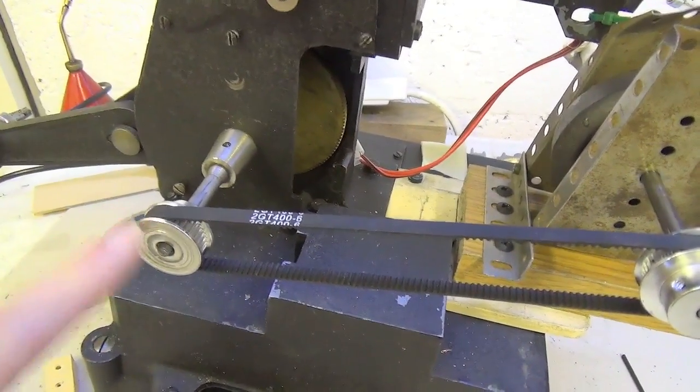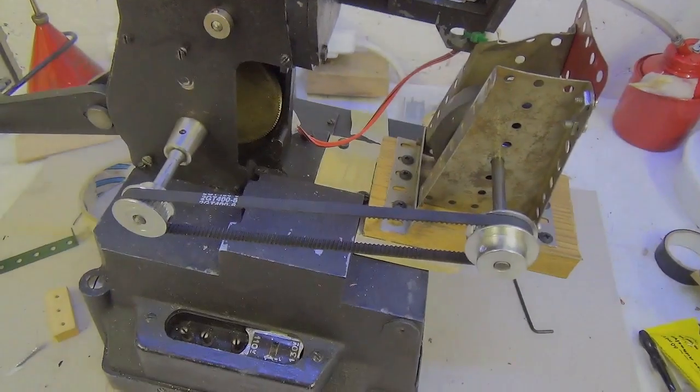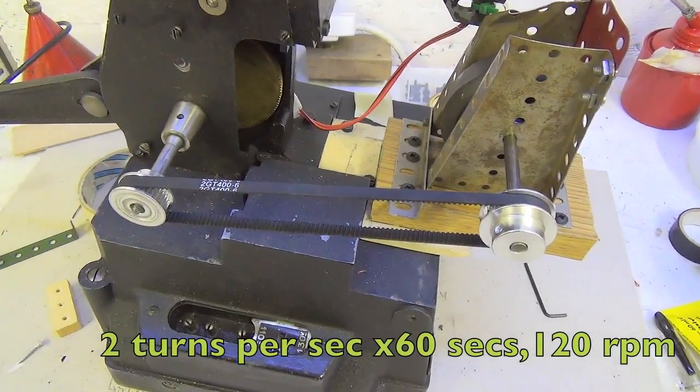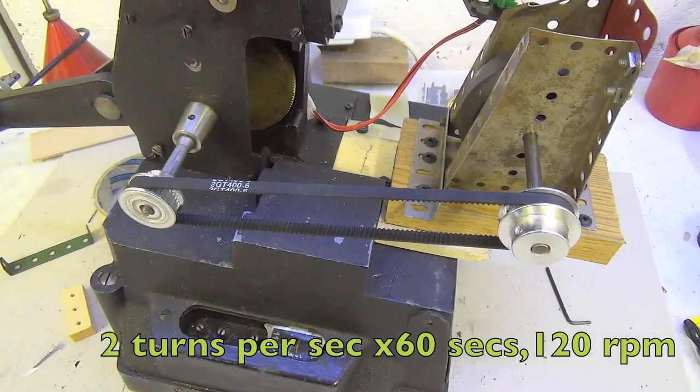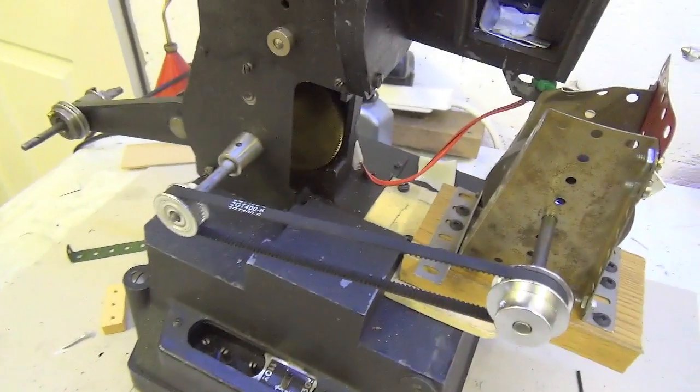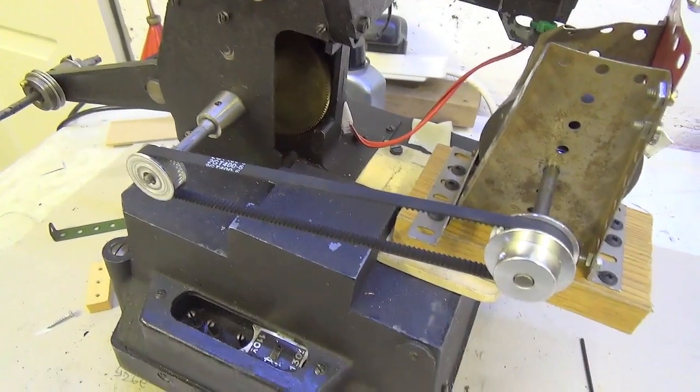So per minute, two turns in one second, so it's two times 60, or 120 revolutions per minute. So it's 120 rpm.